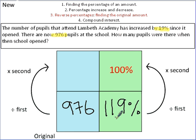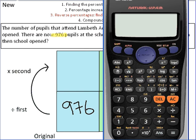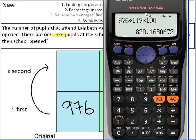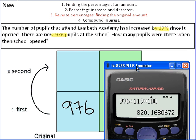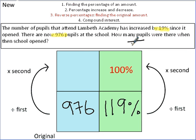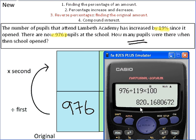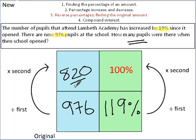Again, we just follow the arrows. So, divide by 119 and times by 100. So, 976, the original amount. We divide by 119, and then we're going to times by 100. So that is 820.1680672. Now, it doesn't tell you what to round to, but we're looking at how many pupils there were when it first opened. So, common sense tells me, I'm going to round to the nearest whole number. So, it's going to be 820 students. There's my answer.